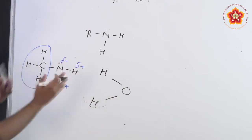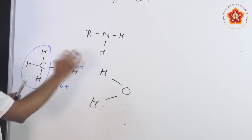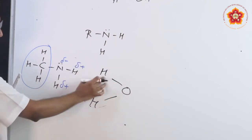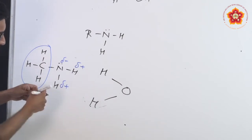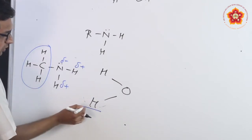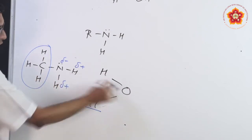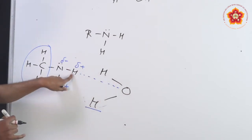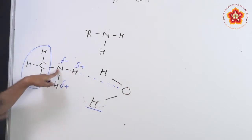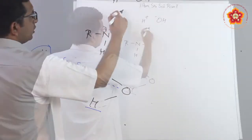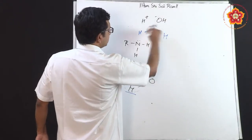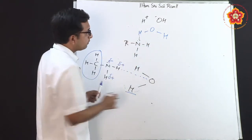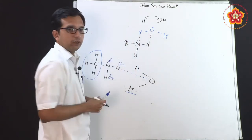The attraction between nitrogen and hydrogen occurs because nitrogen attracts the hydrogen which is attached to an electronegative element. This hydrogen on the amine can also attract the oxygen of water. This results in hydrogen bonding between the amine and water molecules — interactions in both directions between the nitrogen and hydrogen atoms.